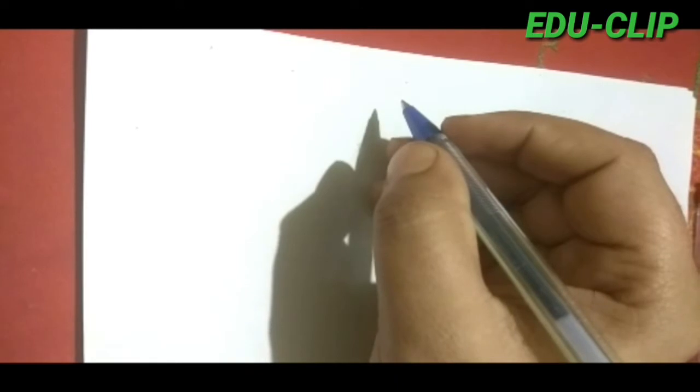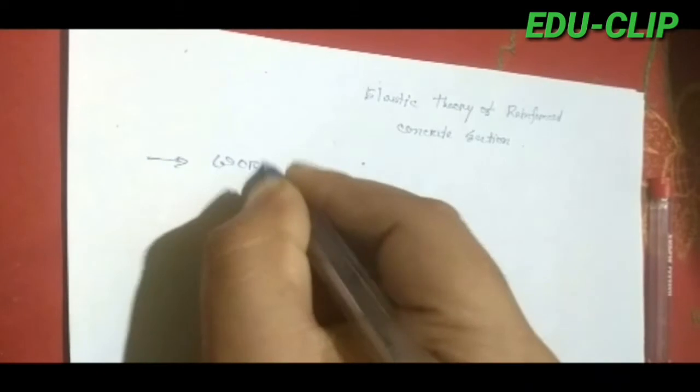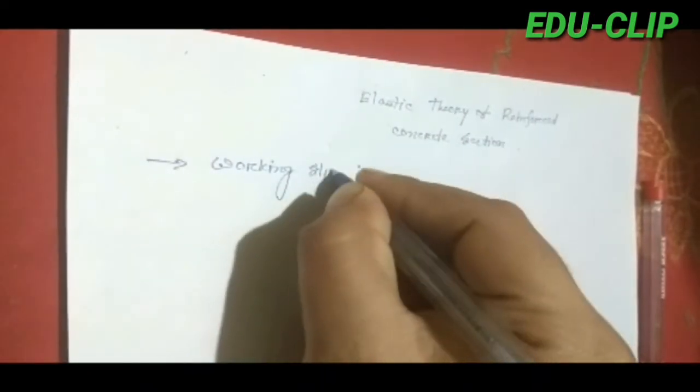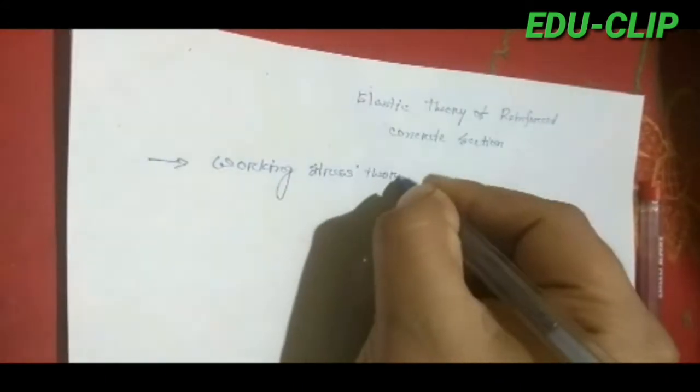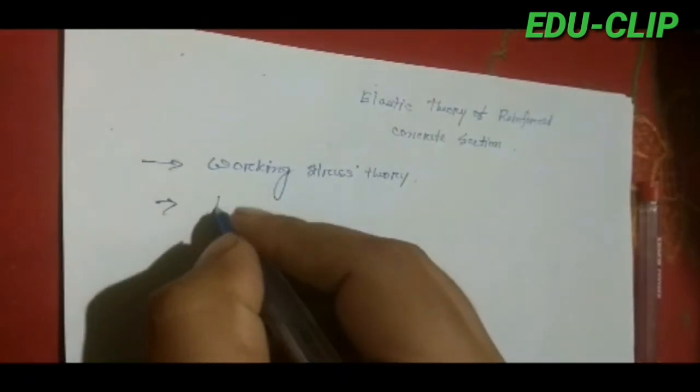Today we will discuss a very important topic in the design of civil engineering. There are many theories of design of a structure in civil engineering. Today we will discuss the elastic theory of reinforced concrete section. This theory is also known as working stress theory, and it is based on the elastic theory of the material.